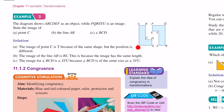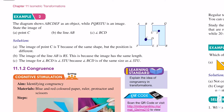Now let's look at example two. The diagram shows ABCDEF as an object, while PQRSTU is its image. An image is something that occurs after a transformation. State the image of point C. We look at C — the image of C is T, because it has the same shape but the position is different. Contoh yang ni, kalau pusing dia jadi L, tempat dia kedudukan dia sama antara C dan L.